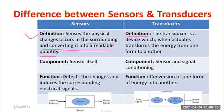If I talk about the transducer, it is a device which, when actuated, transforms energy from one form to another form. LVDT is one such transducer; it operates based on the principle of inductance effect. Strain gauge and load cell are also examples of transducers.